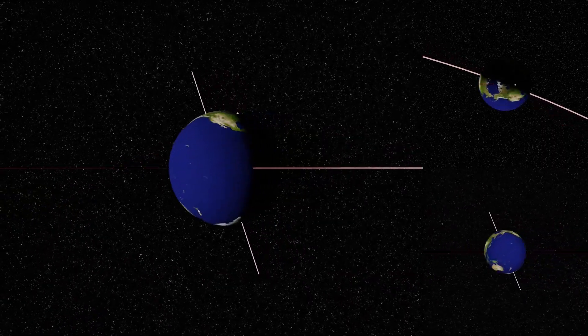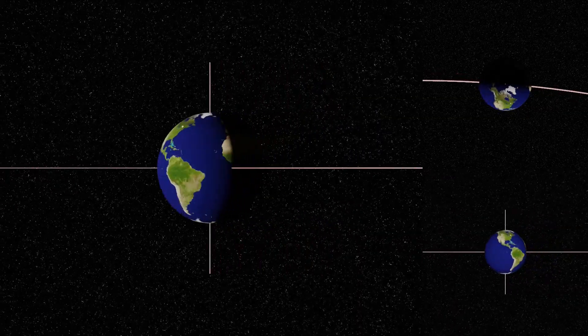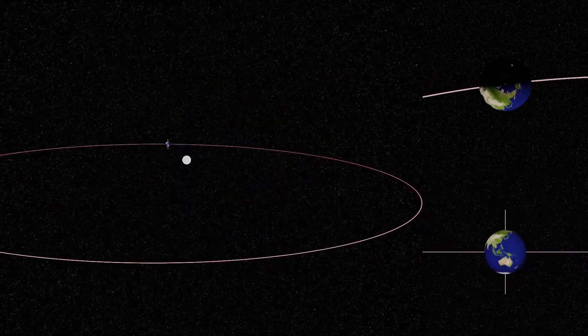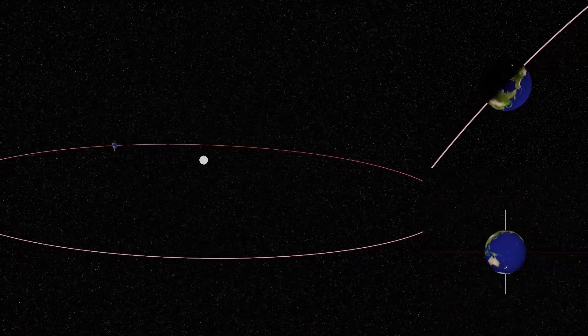For now, imagine Earth without a tilt, standing straight like a little cosmic soldier. Now, let's let Earth twirl around the sun. As Earth orbits, months change,